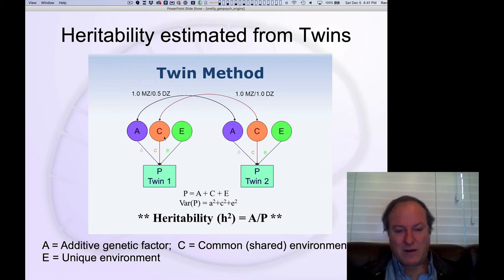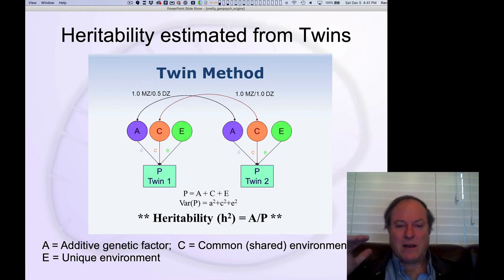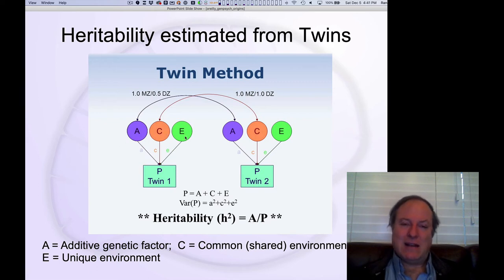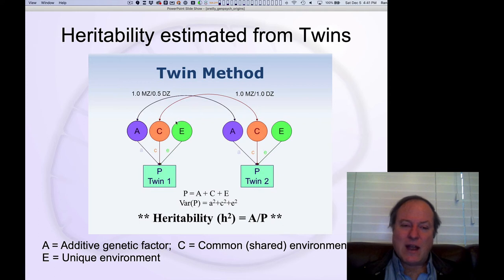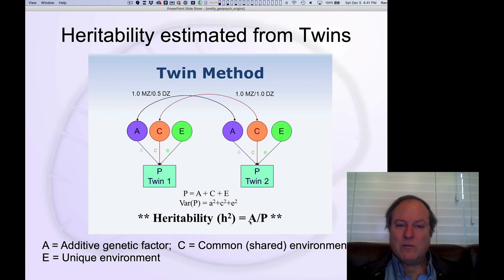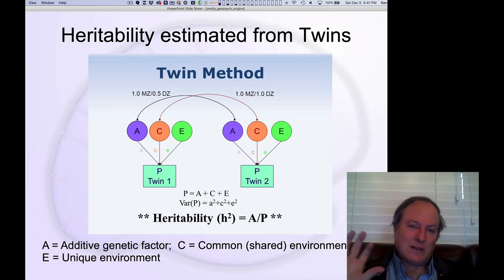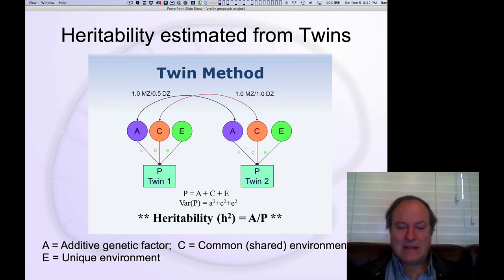The other important thing to understand is that this method is all relative — the same kind of dynamic as when neurons only care about relative differences. Here, the estimates of A depend on your estimates of C and E. If something is systematically affecting the amount of variance you get from the C factor, then your estimate of A goes up because your estimate of C is going down. Since C is in the denominator and A is in the numerator, decreasing the amount of C relatively increases the amount of A.